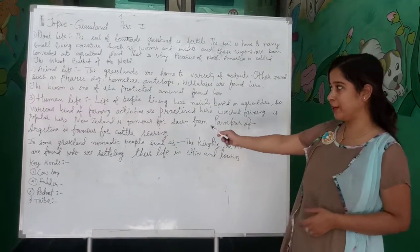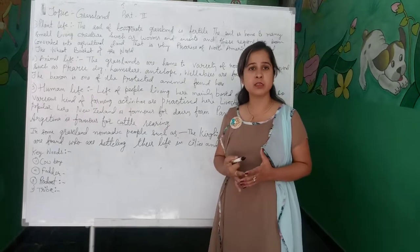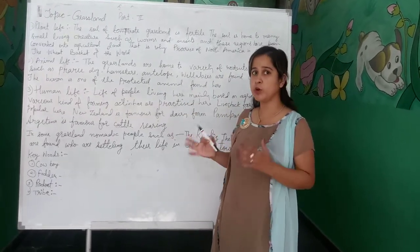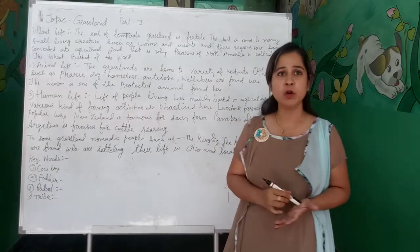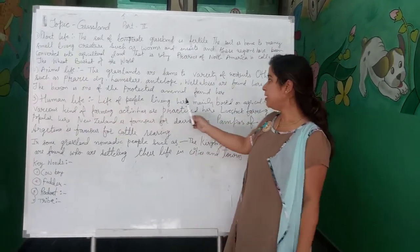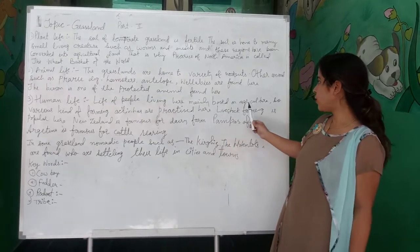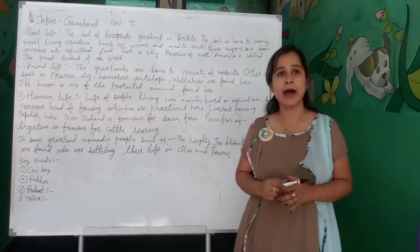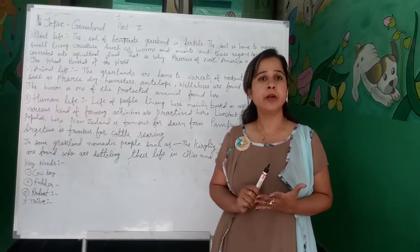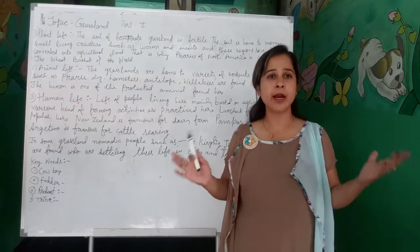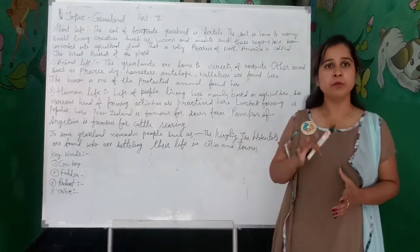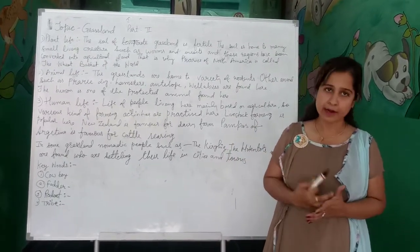The third topic is human life. We will now discuss how people are living there and what kind of people are living there, with special emphasis on tribal people. Tribal people are mainly based on agriculture. As we know, these grasslands are very fertile and different kinds of agricultural activities take place here, so people are mainly based on agricultural activities.